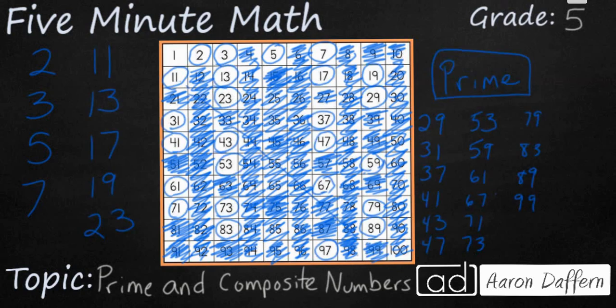If you continue that pattern, you will find a total of twenty-five prime numbers under one hundred. You see them written on the screen here.